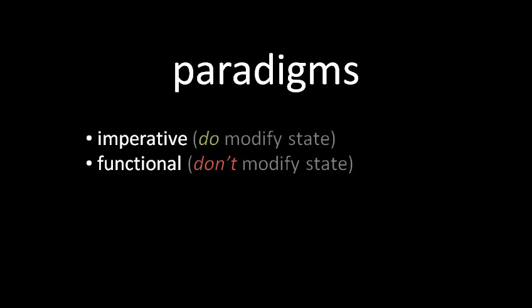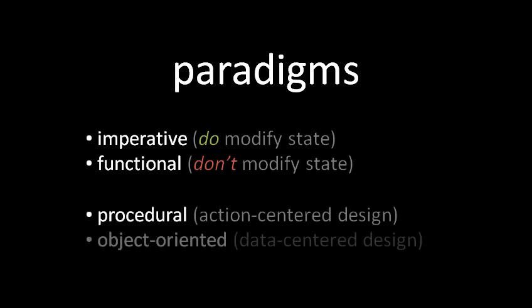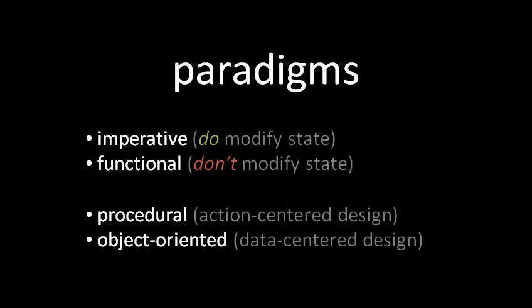A third paradigm, called object-oriented programming, is a style in which the emphasis is on data rather than action. Whereas in normal imperative and functional programming we think of code as a set of functions, in object-oriented programming we think of our code as a set of data types, and those data types have defined behaviors associated with them. Those behaviors are really just functions by another name — they're typically called methods in object-oriented programming — but there still is an inverted emphasis.